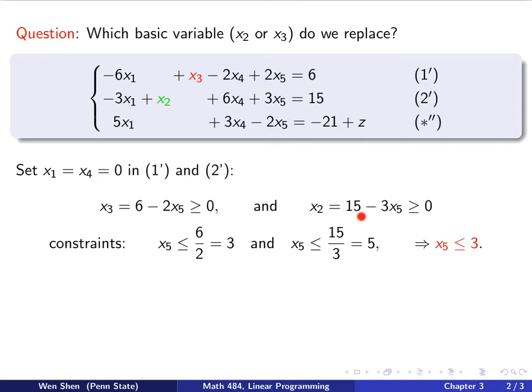And then for the second one, if you do a same manipulation, you get x5 is less than 15 over 3, which is 5. Where does 15 and 3 come from? Well, 15 comes from here, 3 comes from here in the second constraint. And look at these two constraints: x5 less than 3, x5 less than 5.